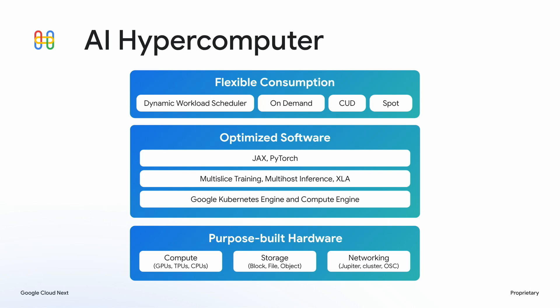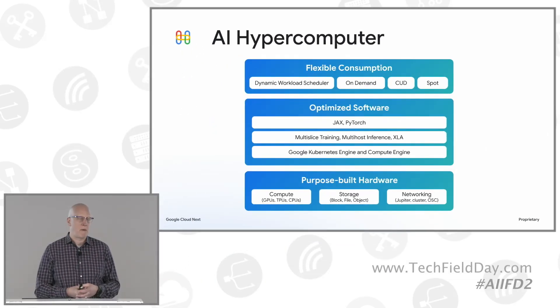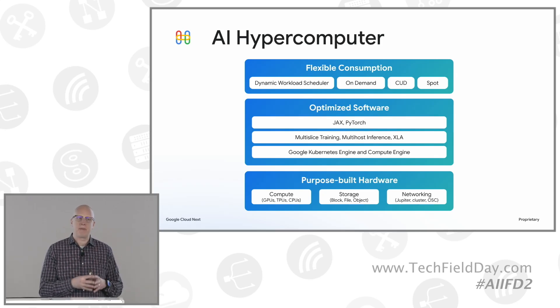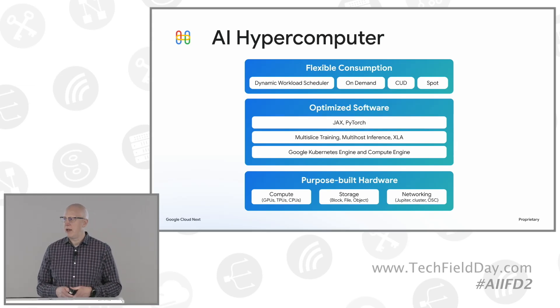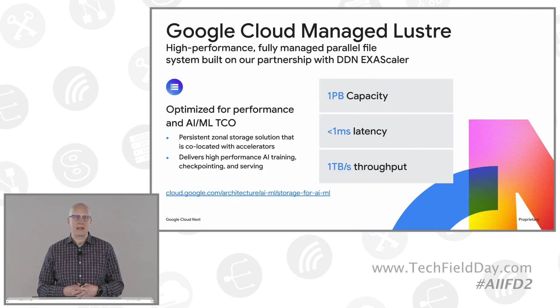This is really representative about where we're investing our development resources to make it easier for customers to consume and run their AI workloads in Google Cloud. It's not all about infrastructure. At the top, the consumption model — this is about how you optimize costs, specifically around compute and accelerator resources. You'll hear Elias talk about Cluster Toolkit and Cluster Director focusing on flexible consumption models. The optimized software layer includes JAX, PyTorch, and software deployment models that run on GKE or GCE. At the bottom, the purpose-built hardware covers compute, storage, and networking.